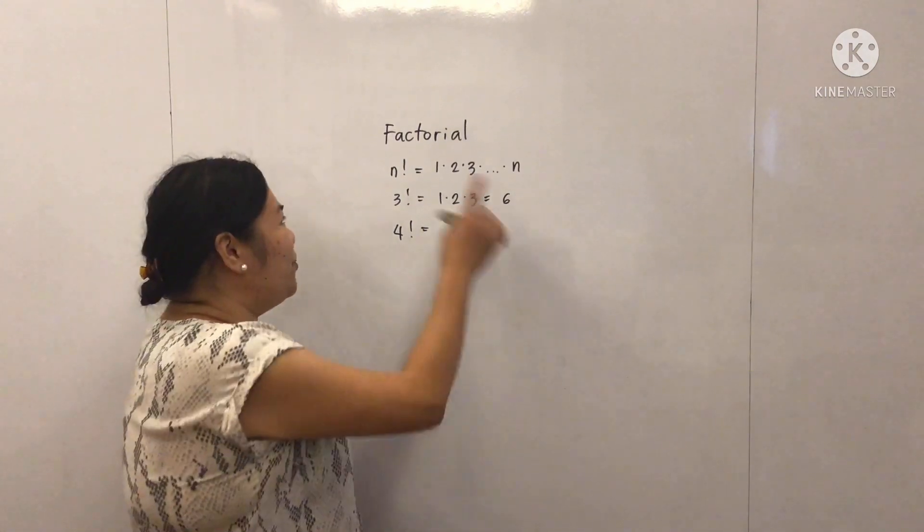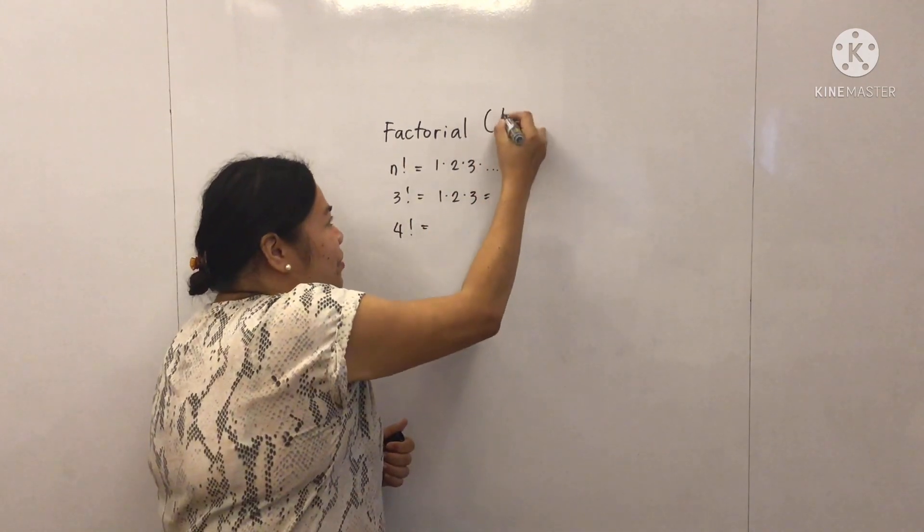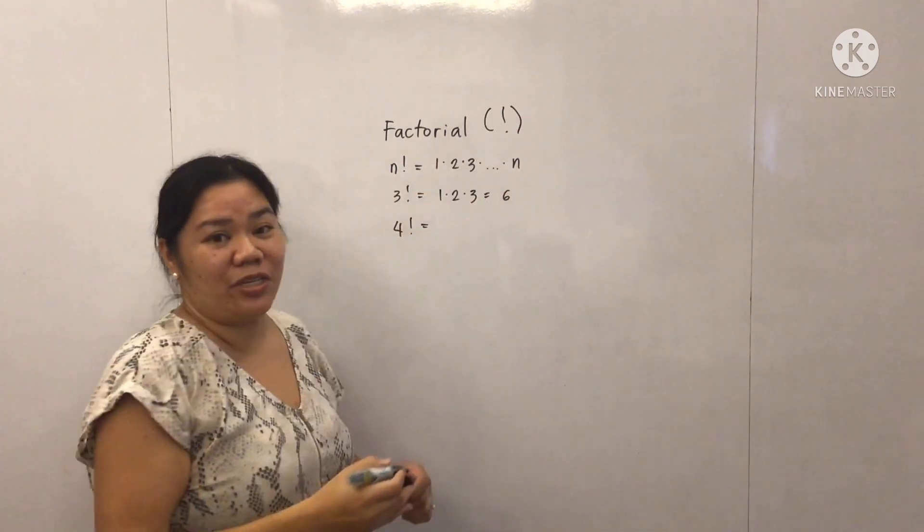Okay, so when you say factorial, the notation that we're going to use is the exclamation point.